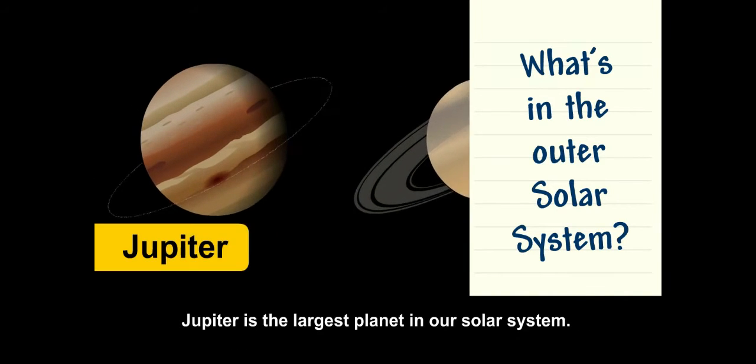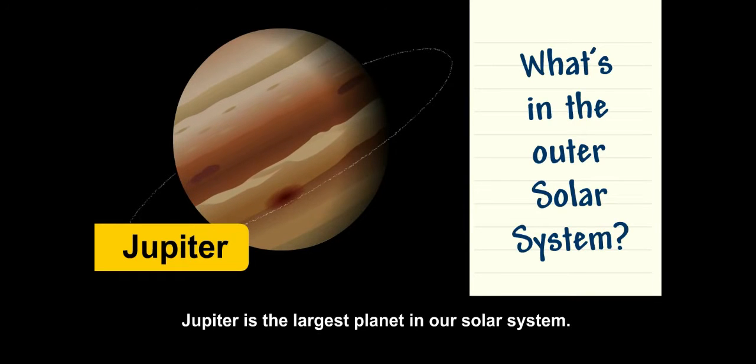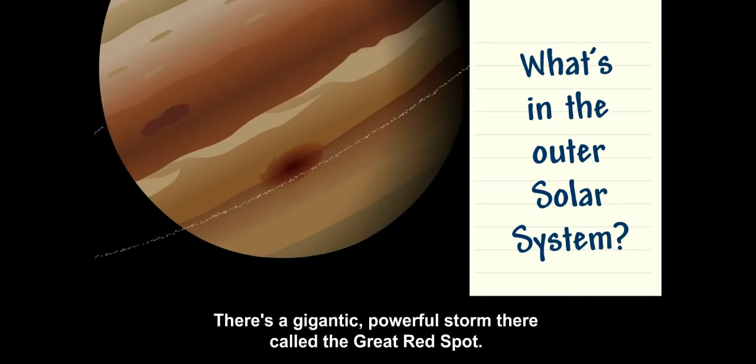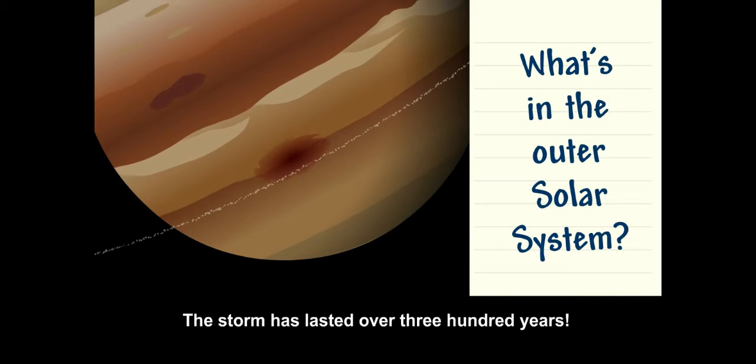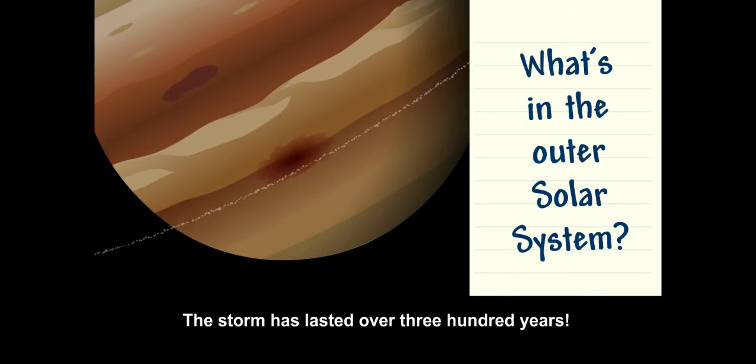Jupiter is the largest planet in our solar system. There's a gigantic, powerful storm there called the Great Red Spot. The storm has lasted over 300 years.